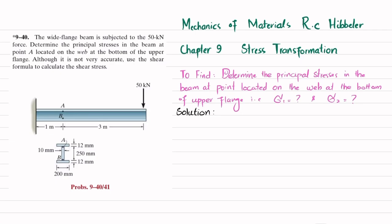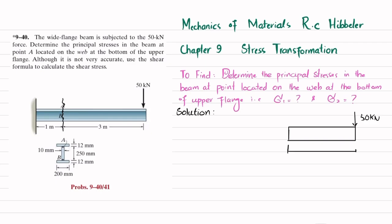Let's start with the solution. The first step is to find the state of stress at point A. We cut the beam at point A and draw the free body diagram. There is a point load of 50 kN at a distance of 3 meters. When we cut at this point, there will be a shear force V acting upward and a bending moment M.